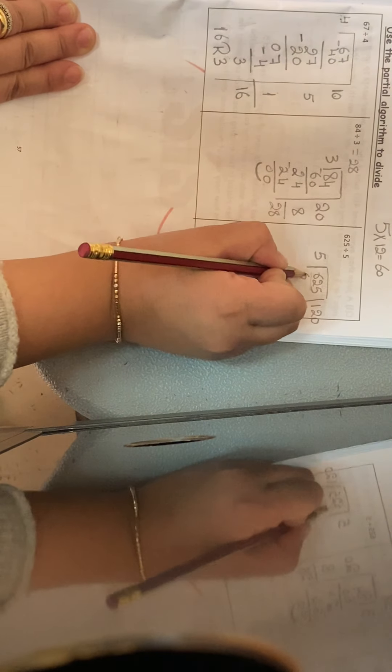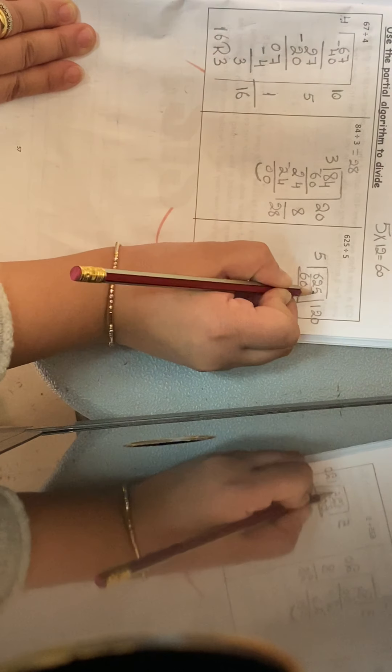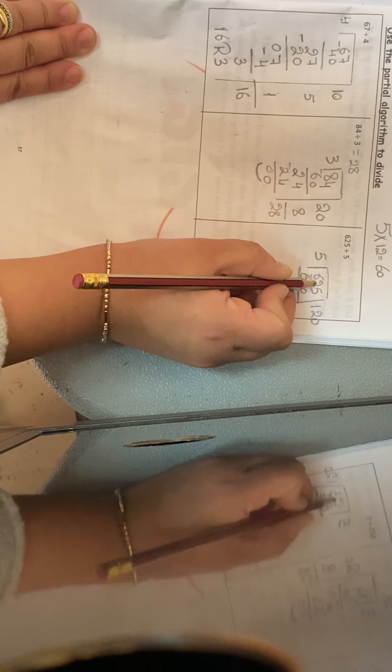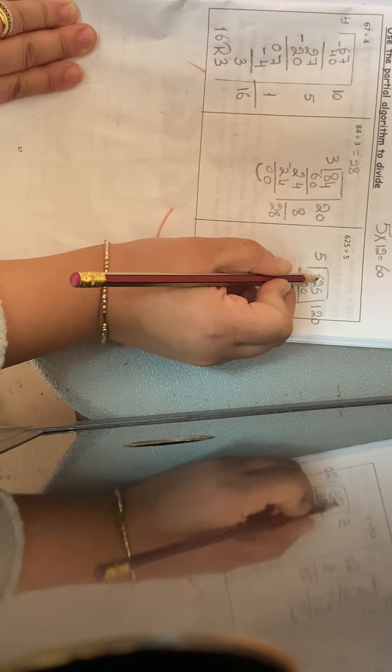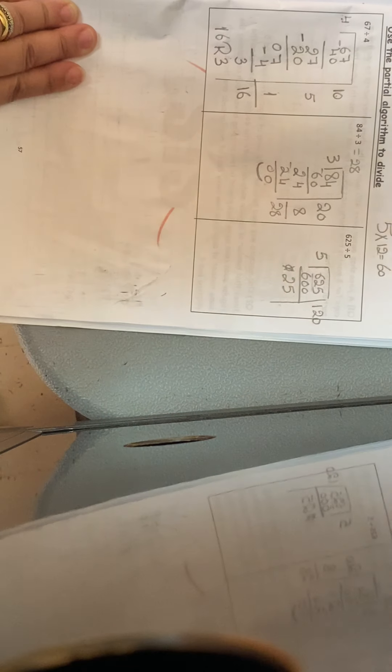So here will be 600. And I will do minus. 5 minus 0, 5. 2 minus 0, 2. 6 minus 6, 0.